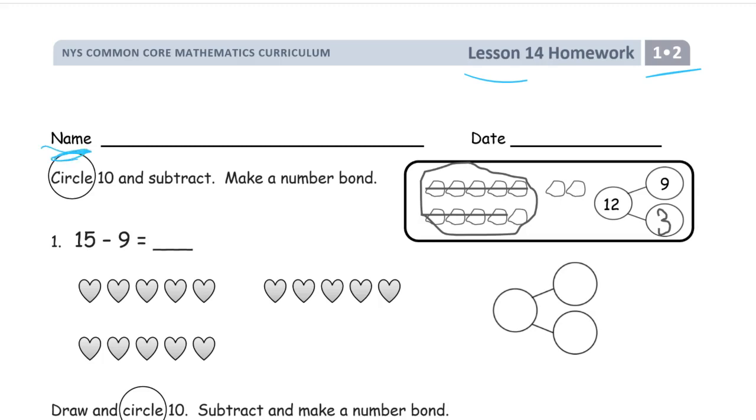Our directions are to circle 10 and subtract, just like we have in our example picture here, and make a number bond. In the beginning they'll have the picture for us, but then we're going to have to draw our own pictures. And you've got to have the pictures.